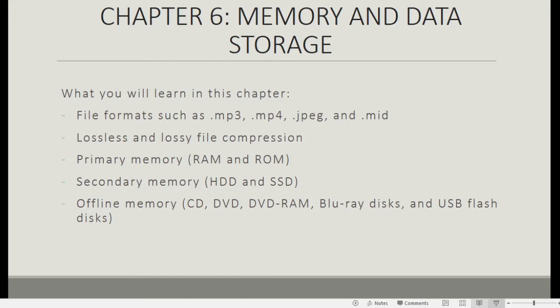In this chapter, you will learn about file formats such as .mp3, .mp4, .jpg, and .mid, lossless and lossy file compression, primary memory which is RAM and ROM, secondary memory which is HDD and SSD, and offline memory which is CD, DVD, DVD RAM, Blu-ray, USB flash disks, and removable HDDs.